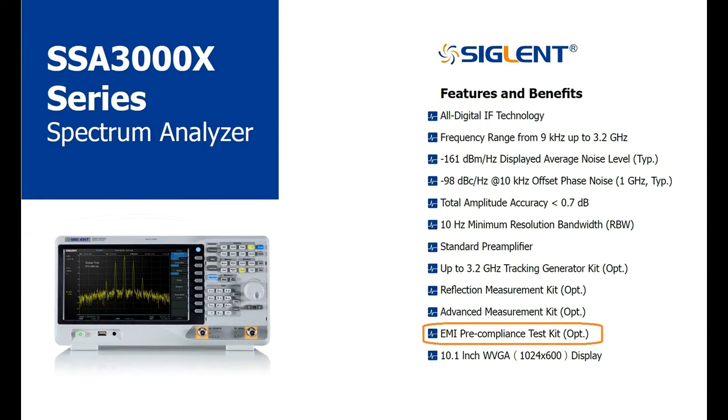The SSA 3000s are also available with the Advanced Measurement Kit or AMK option. The AMK option includes a number of standard measurements used in broadcasting.